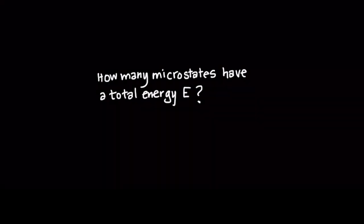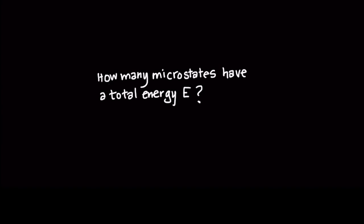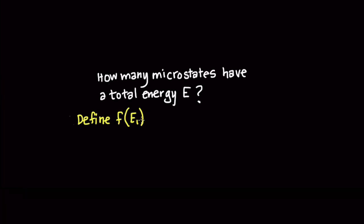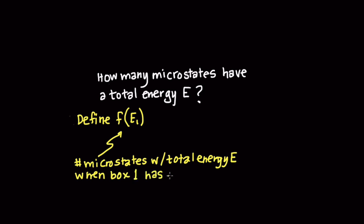Let's count the total number of microstates that the composite system can have, which correspond to a total system energy E. The easiest way to do this is to first define a new function, F of E1, which is the number of microstates of the composite system when box 1 has energy E1. To do this, we count the number of microstates where box 1 has some energy E1 and multiply this by the number of microstates where box 2 has energy E minus E1.